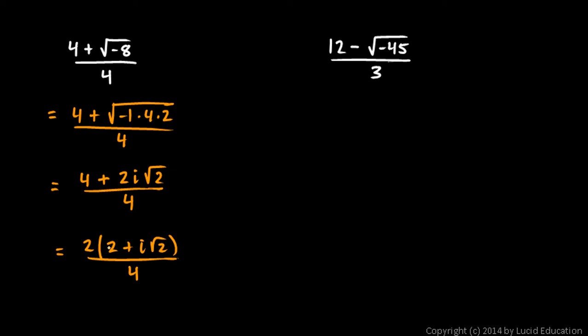And you can see if we distributed this 2 right here, we'd have 2 times 2 would give us this 4, and 2 times i root 2 would give us this 2i root 2. And now we can simplify this 2 and this 4, because this 2 is a factor of the numerator. You can't simplify terms of the numerator with the denominator, but you can simplify factors. So this 2 just becomes a 1 and reduces that to a 2.